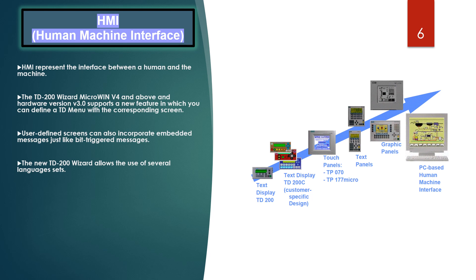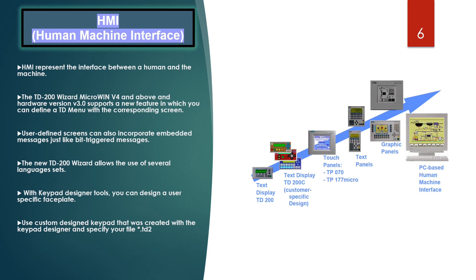There is also a very interesting tool: the Keypad Designer. With this tool you can design a user-specific faceplate for the TD200 C, freely choosing the assignments, colors, and functions of buttons. The tool is installed with Step 7 Microwin and can also be used independently of the programming software. It outputs a file with the extension static.td2 containing the data for the faceplate. To use it, select the option 'use custom design keypad created with the Keypad Designer' and specify your file with extension static.td2.